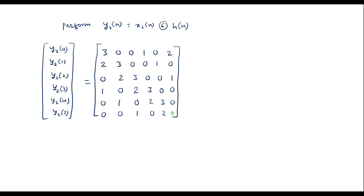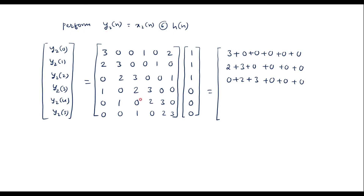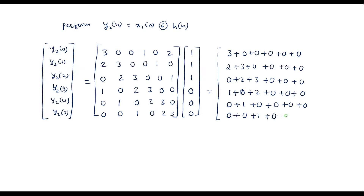Write the h[n] sequence as 1, 1, 1, 0, 0, 0. Perform the matrix multiplication. The first row gives 3 plus 0 plus 0 equals 3. Second row gives 2 plus 3 plus 0 equals 5. Third row gives 0 plus 2 plus 3 equals 5. Fourth row gives 1 plus 0 plus 2 equals 3. Fifth row gives 0 plus 1 plus 0 equals 1. Sixth row gives 0 plus 0 plus 1 equals 1.